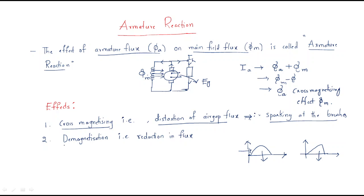The second effect is demagnetization. Demagnetization means reduction in flux — the flux will be reduced. These are the things that happen due to armature reaction.